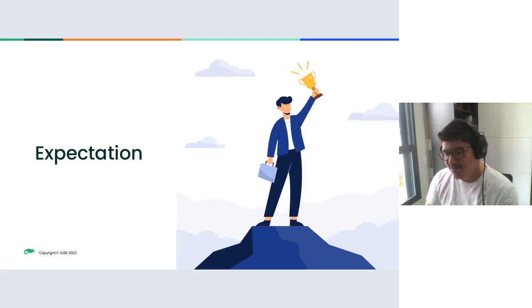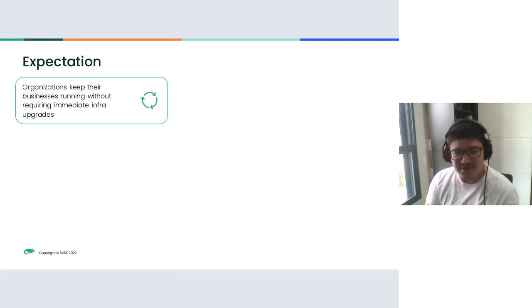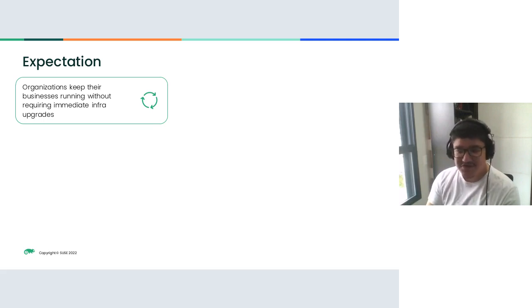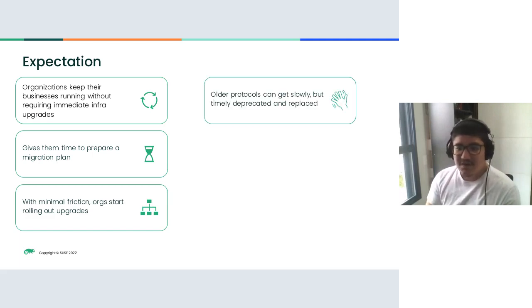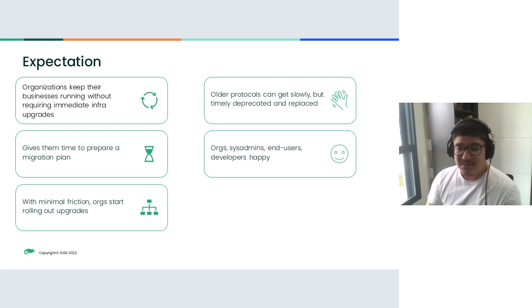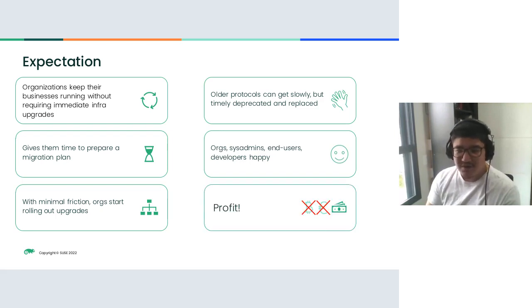The expectation when Microsoft released newer versions with improvements was that organizations kept their things running without requiring immediate infrastructure upgrades — you don't have to spend money and time to immediately change. You have time, and you can start rolling out upgrades slowly and progressively without major conflicts. Meanwhile, older protocols and appliances could phase out older code, and everyone — companies, users, system administrators, developers — would be happy because you don't have to support and deal with legacy stuff anymore.